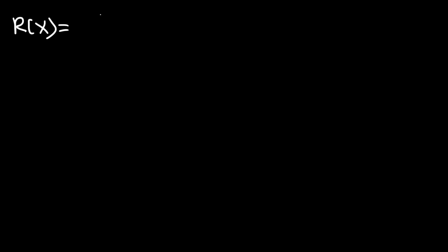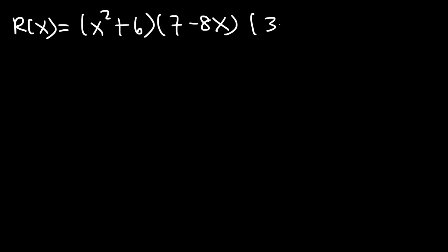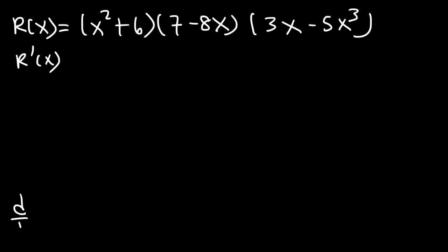Now let's say r of x is equal to x squared plus 6 times 7 minus 8x plus 3x minus 5x cubed. What's r prime of x? In this problem we have 3 factors instead of 2. So how can we use the product rule when we have 3 factors? We can call this f, g, and h.